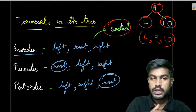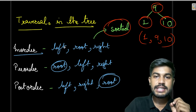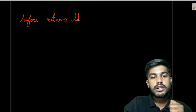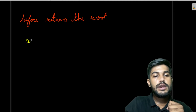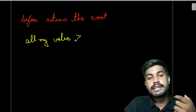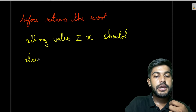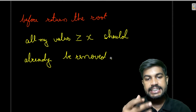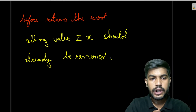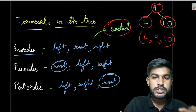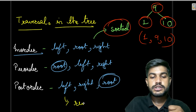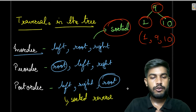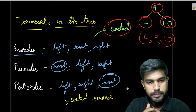Before returning the root, all values greater than or equal to x should already be removed. So we need a traversal where all greater values are processed before we reach the current root. Post-order traversal processes children before the parent, so it gives us values in a high-to-low order, which is what we need.